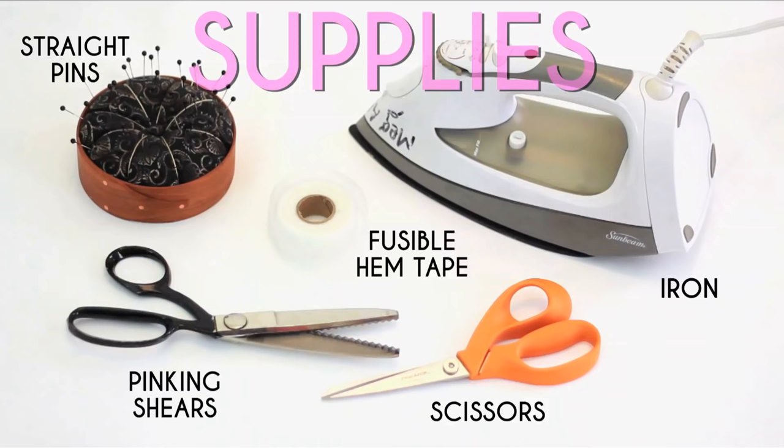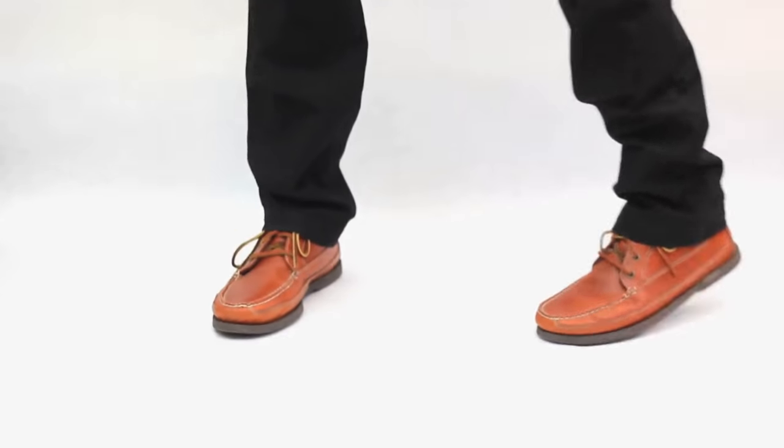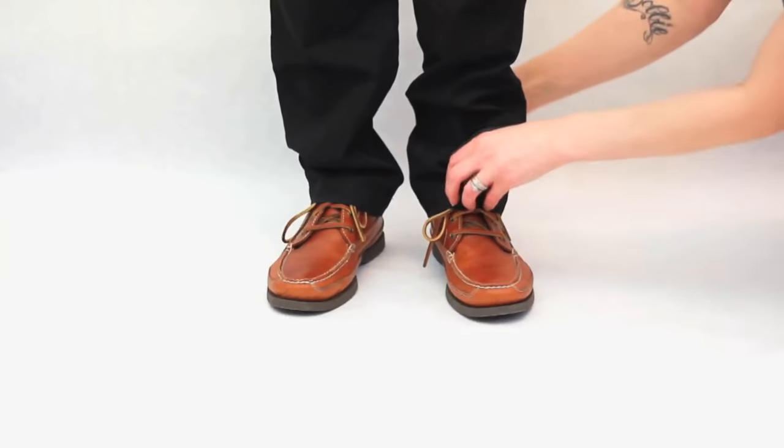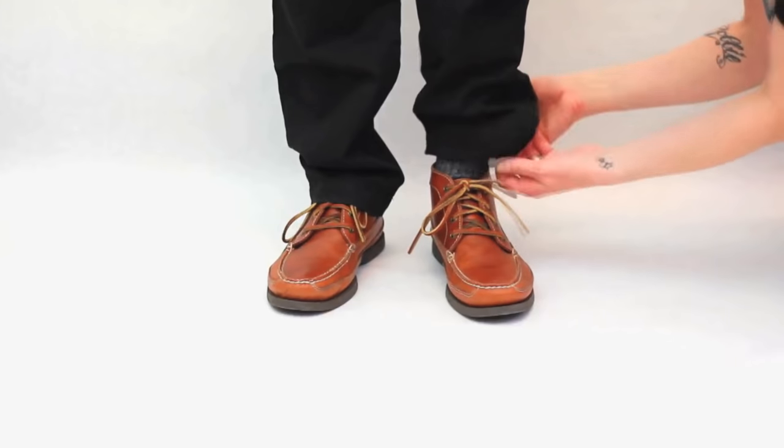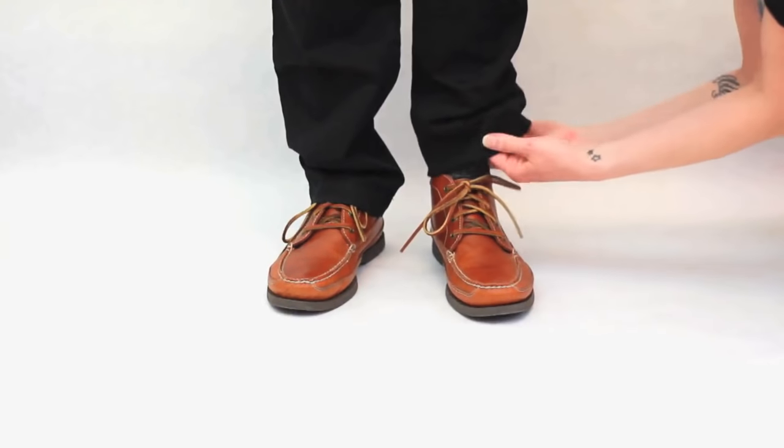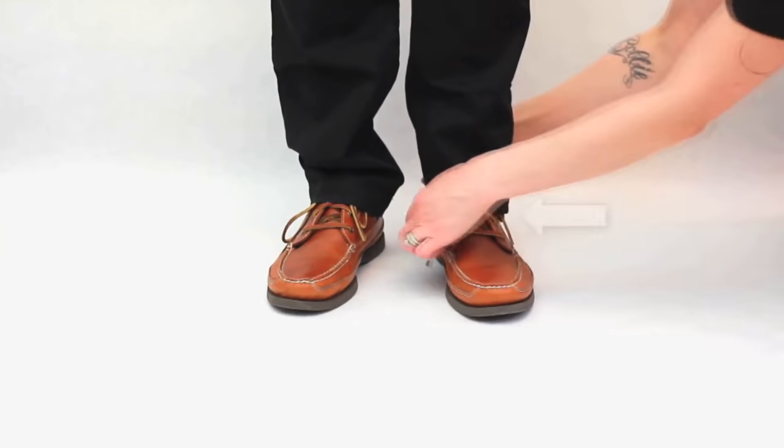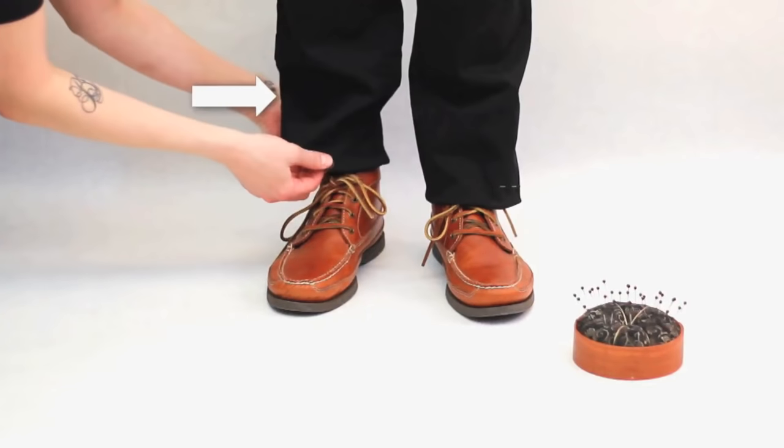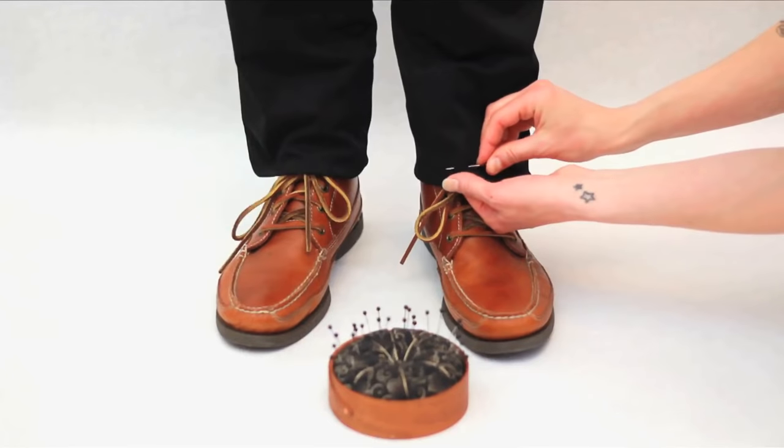Here's what you'll need. To get the best length, put on your pants and a pair of shoes you'd wear with them. While standing straight up, have a friend fold under the pant cuff to the desired length. You want them long enough to cover the top of the shoe without bunching up the pant leg. Pin to hold.